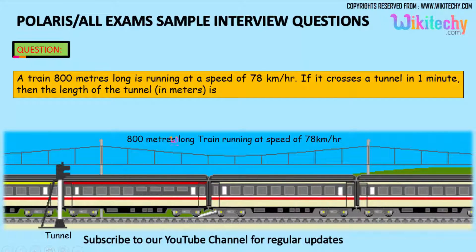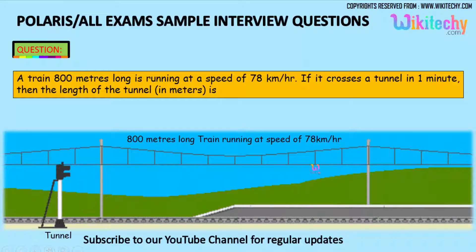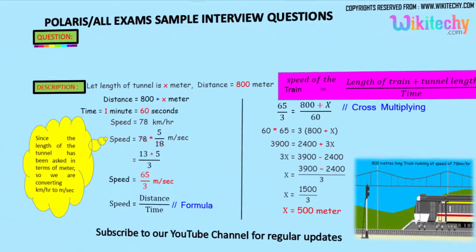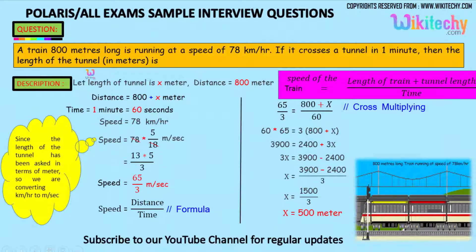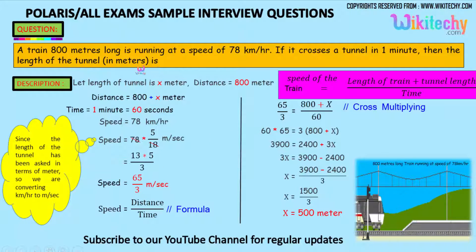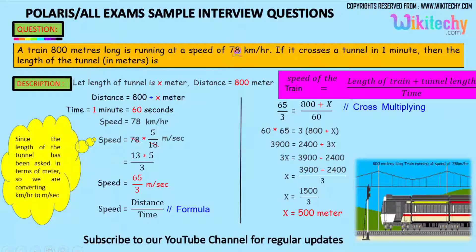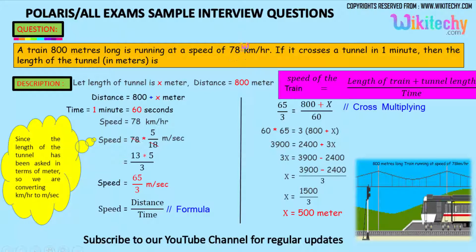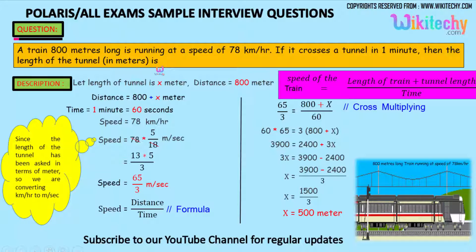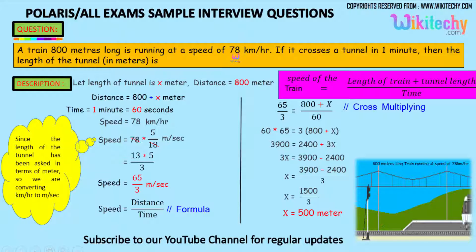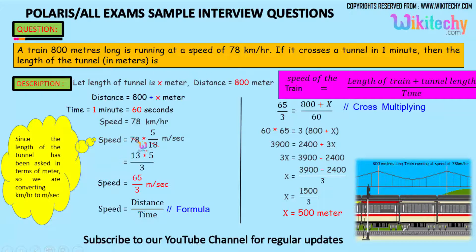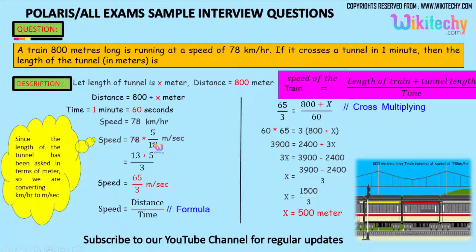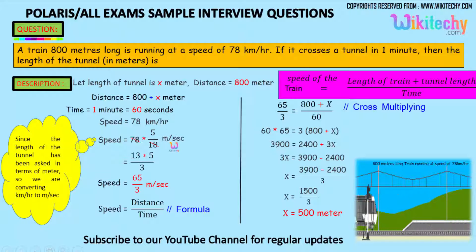So 800 meters long train running at a speed of 78 km per hour. I am trying to find the length of the tunnel in meters, but the speed is in km per hour, so I need to convert the speed from km per hour into m per second. To convert 78 km per hour into m per second, I need to multiply by 5 by 18.